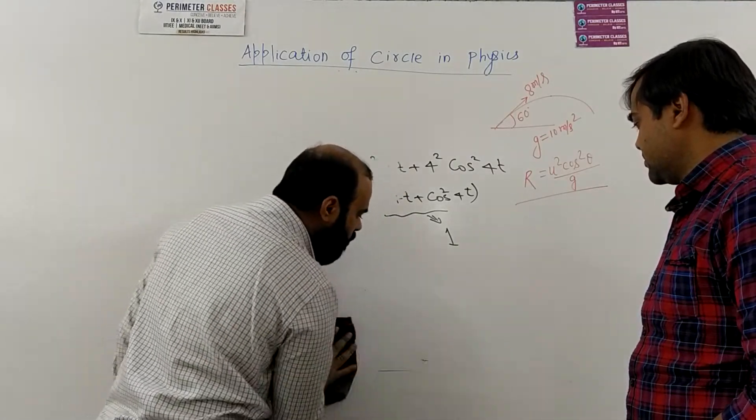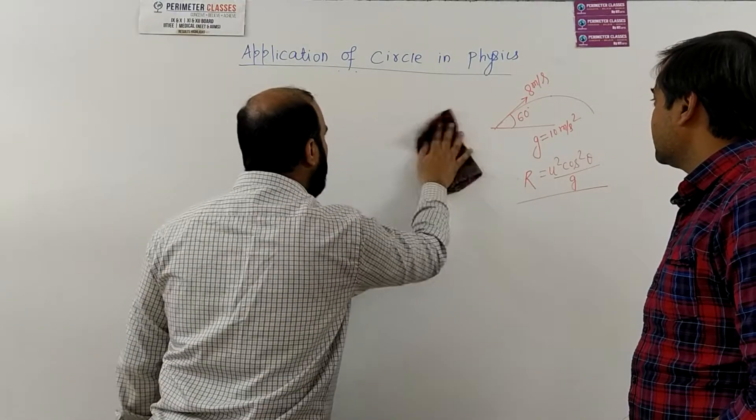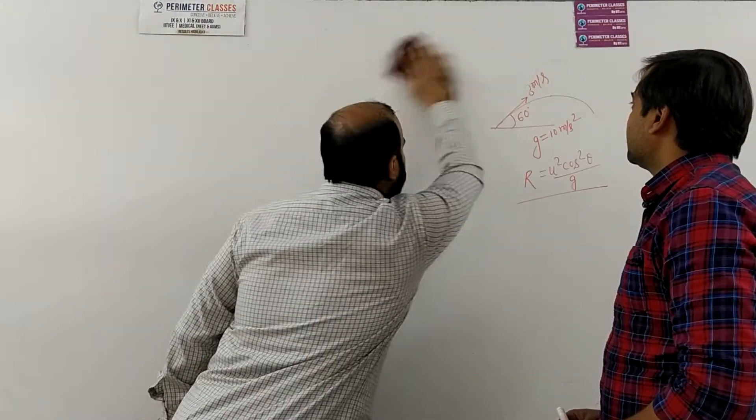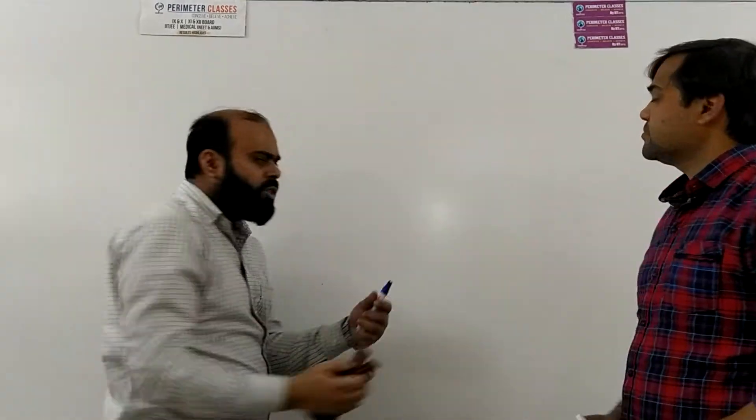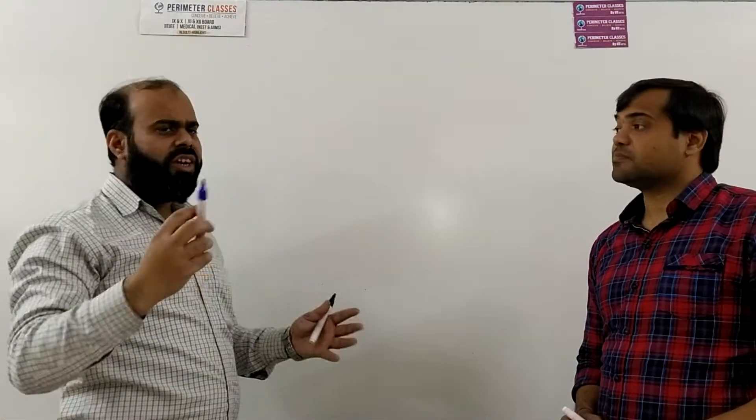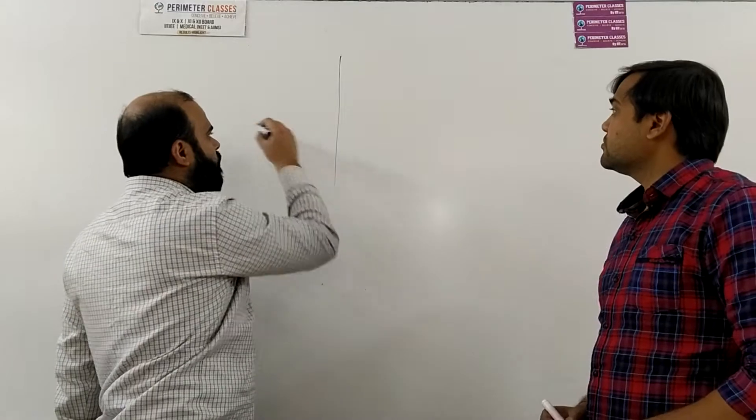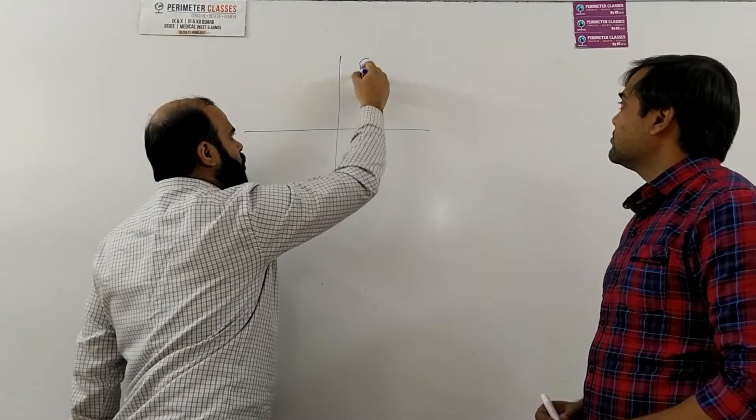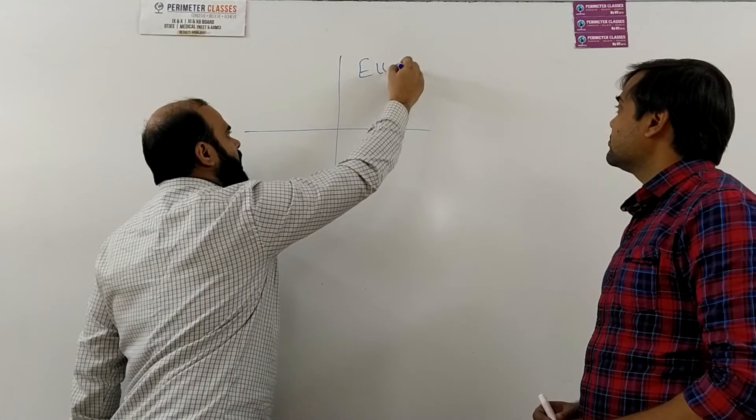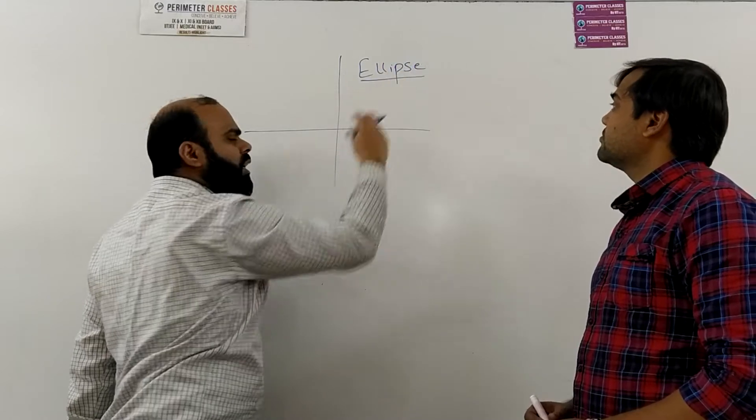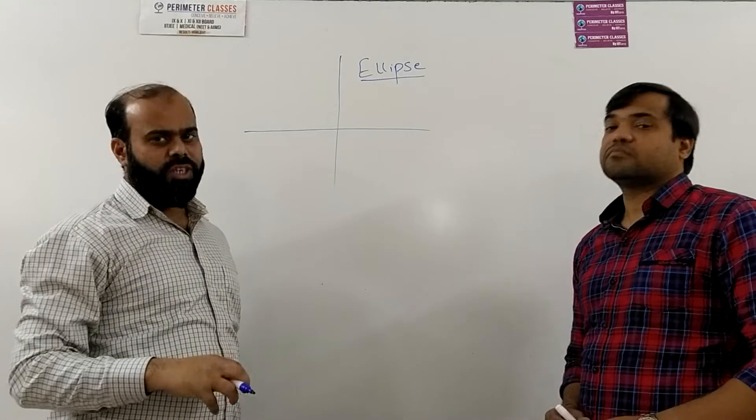Now we will move on to the topic which is called ellipse. So ellipse is a general case of a circle when we talk about ellipse. Circle is a specific case of ellipse.